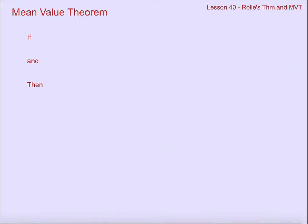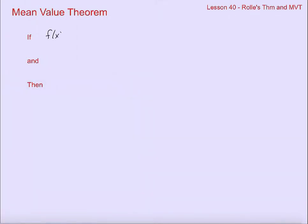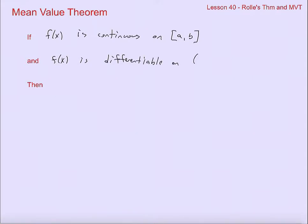We're going to talk about the mean value theorem and see one example of how we can use it. The mean value theorem states that if you have a function that is continuous on the closed interval from a to b, and also differentiable on the open interval from a to b.